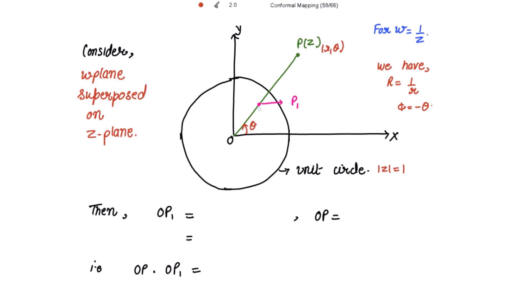Let point P1 have polar coordinates (1/r, θ). Then OP1 = 1/r and OP = r. So OP1 = 1/OP, which means OP · OP1 = 1. This means P1 is the inverse point of P with respect to the unit circle.